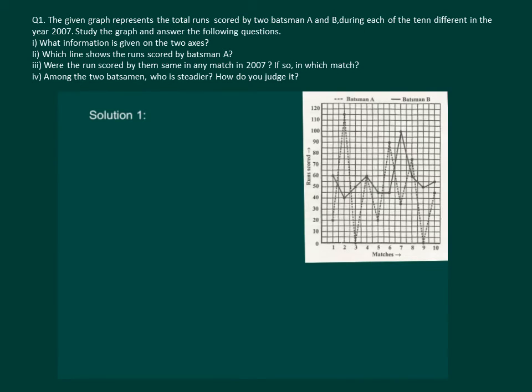Now let us start with the first part of our question. It says that what information is given on the two axes? We have already discussed it but we need to pen it down. We will say that x-axis represents the matches played in year 2007 and y-axis represent the runs scored.